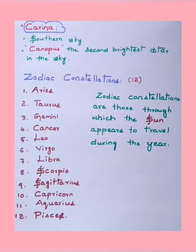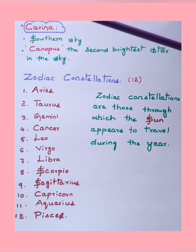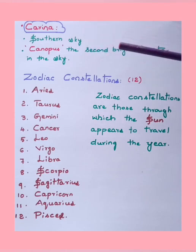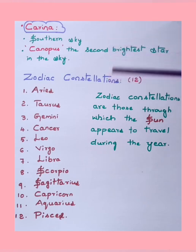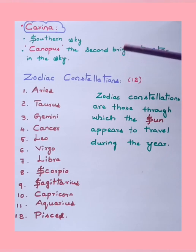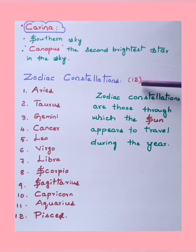Carina is seen in the southern sky. Canopus, the second brightest star in the sky, is found in the constellation Carina. Moving to zodiac constellations — there are 12 main zodiac constellations, which are those through which the sun appears to travel during the year.